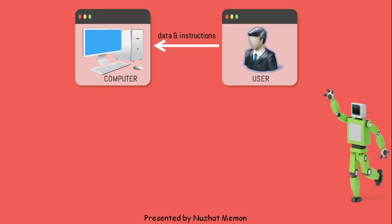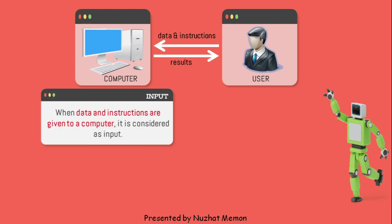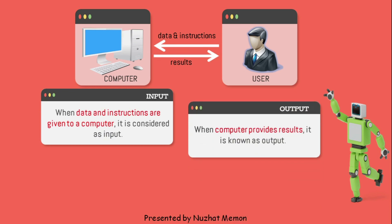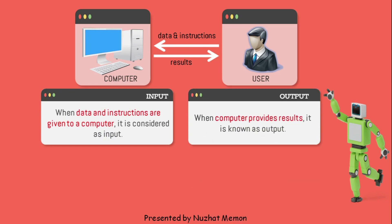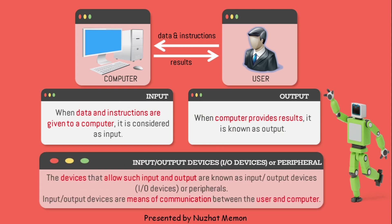Input is when a user gives data and instructions to a computer. When the computer gives results according to that data and instructions back to the user, it is known as output. The devices that allow such input and output are known as input-output devices, or IO devices, or peripherals. They are the means of communication between the user and the computer.